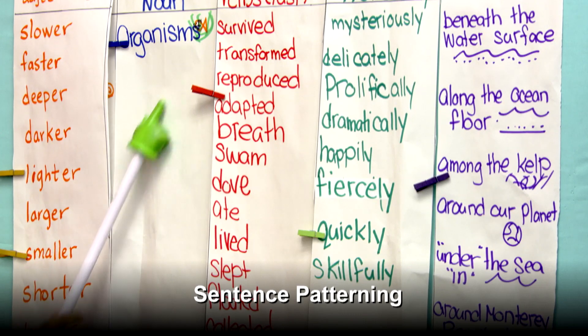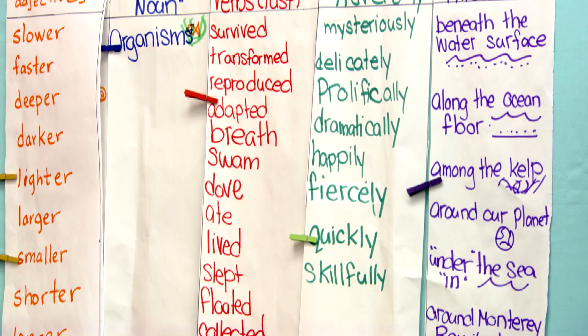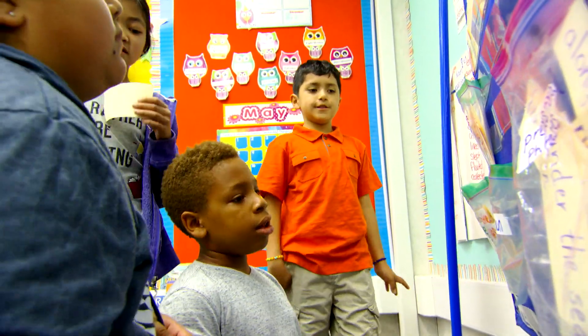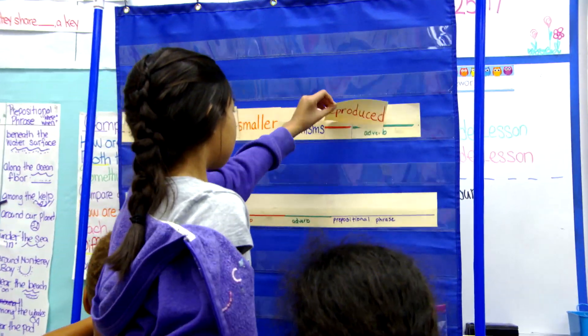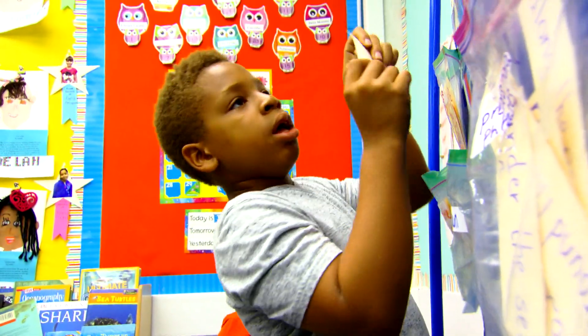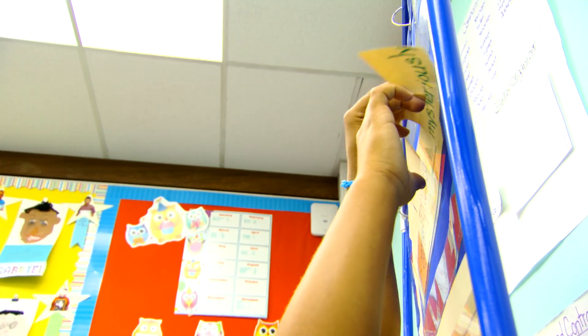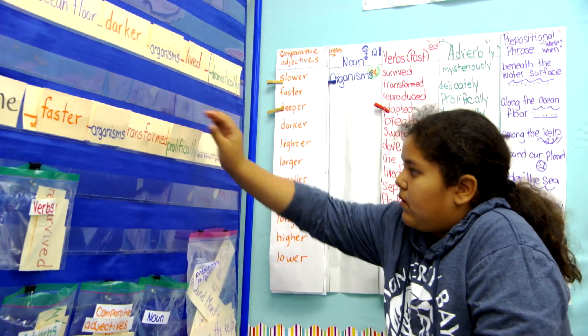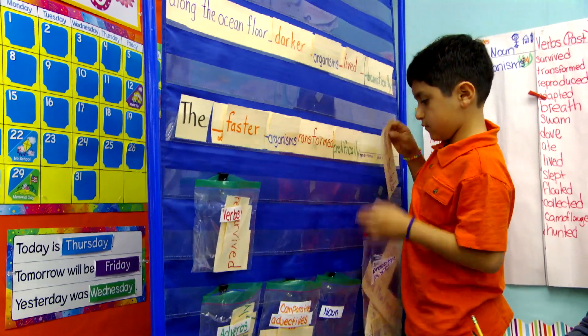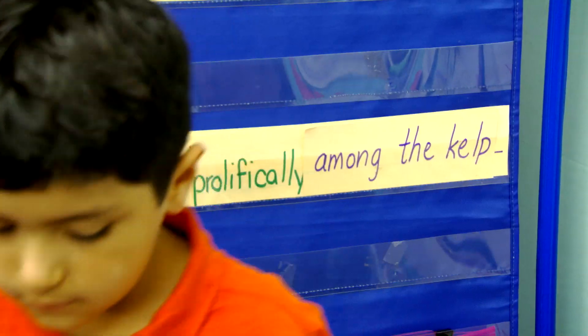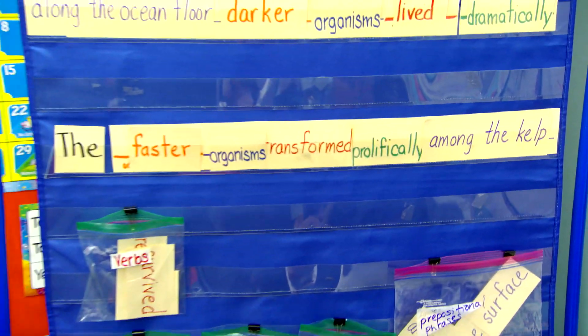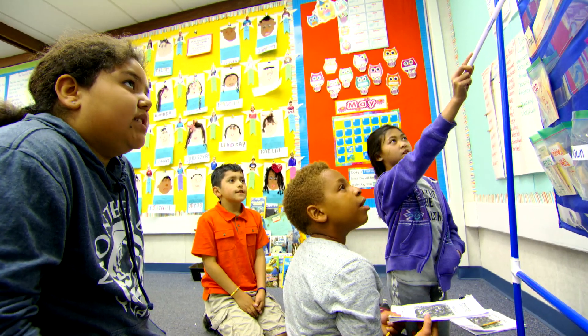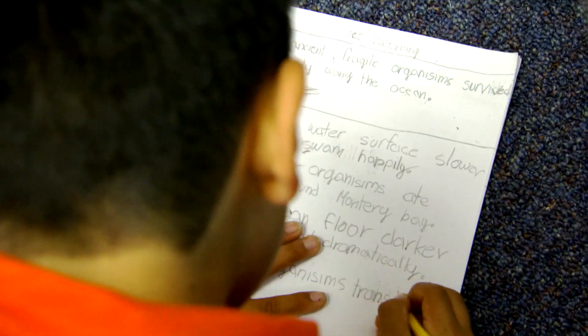Another Daily Five activity is word work — working with vocabulary, sentences, and grammar. We saw a group doing what we call the sentence patterning chart, structuring complex sentences involving comparative adjectives, because this is a compare and contrast unit. Students were constructing sentences about the ocean and ecosystem, becoming more aware of how to structure a sentence in English — a preface to their own writing, saying them, talking about them, and then writing them in their notebooks.